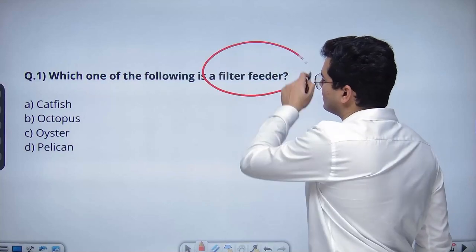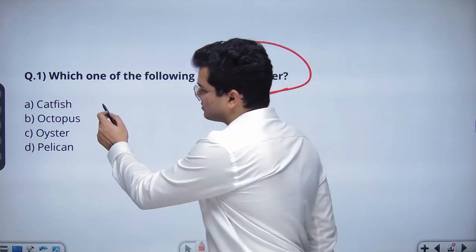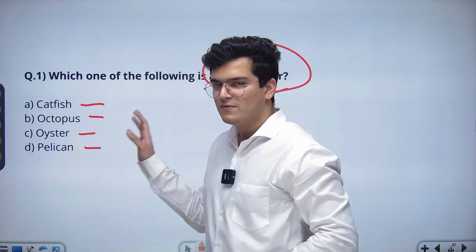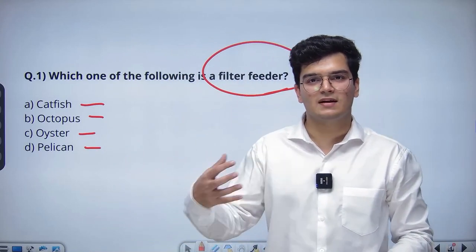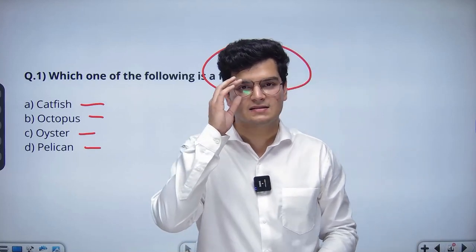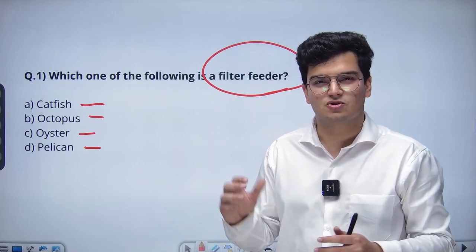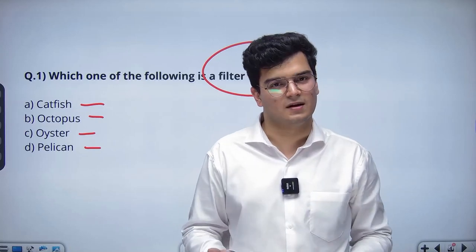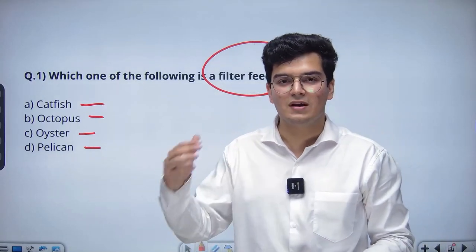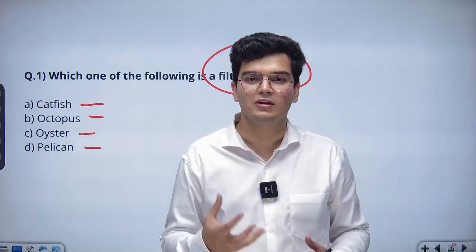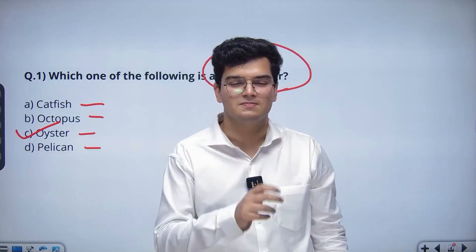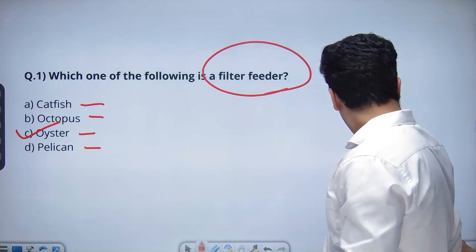Which of the following is a filter feeder? Catfish, Octopus, Oyster, Pelican. This is obviously a tough question and without theoretical backing, it's very difficult to know that the answer is Oyster. But what is the lesson? The answer itself is not important. This exact question is not going to be repeated. The lesson is that environment is not based only on current affairs. You need strong theoretical backing for these sorts of questions. Don't forget to read the last four chapters of the biology NCERT.